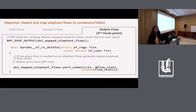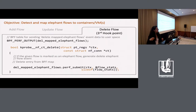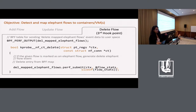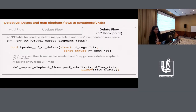The third hook point executes when a flow is deleted. If the flow is marked as an elephant flow, this routine generates a delete elephant flow event to user space and clears the entry from the BPF map. We use a different BPF table called the delete-mapped-elephant-flows table to relay this information to user space. The flow stats will indicate which VM interface the flow originated from.